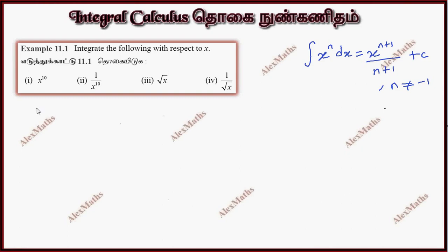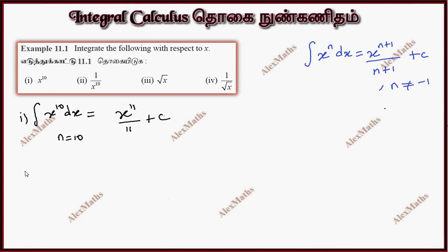Subdivision 1: integration of x power 10 dx. Here n equals 10, so we apply the formula: x power 10 plus 1, divided by 11. The answer is x power 11 by 11 plus c.